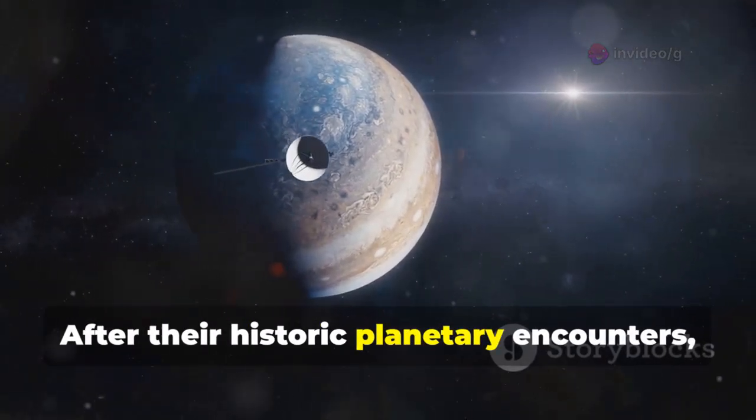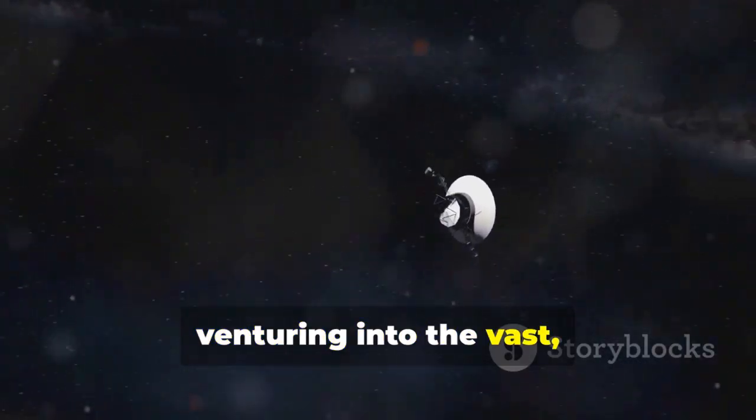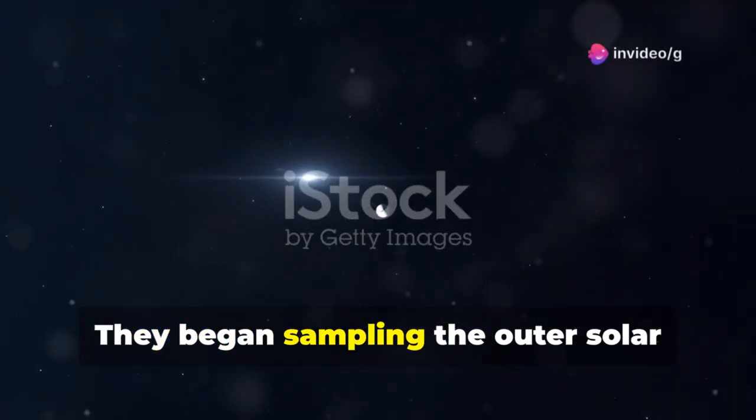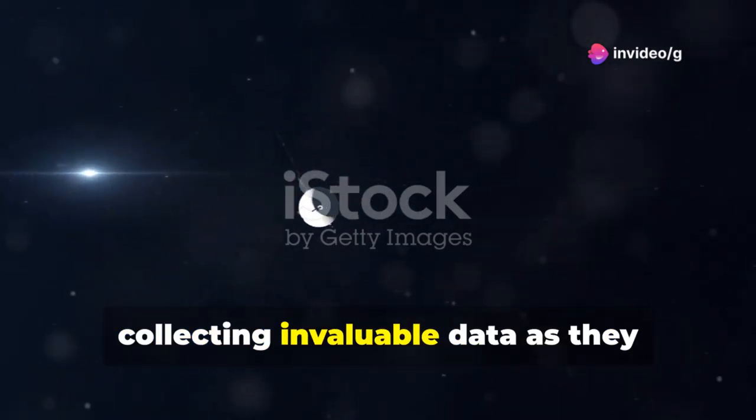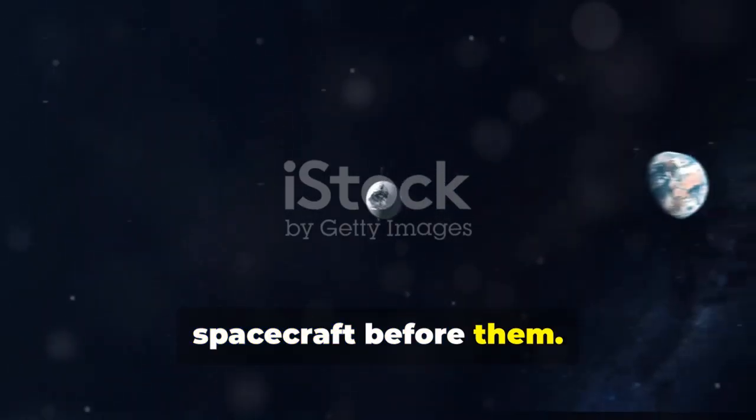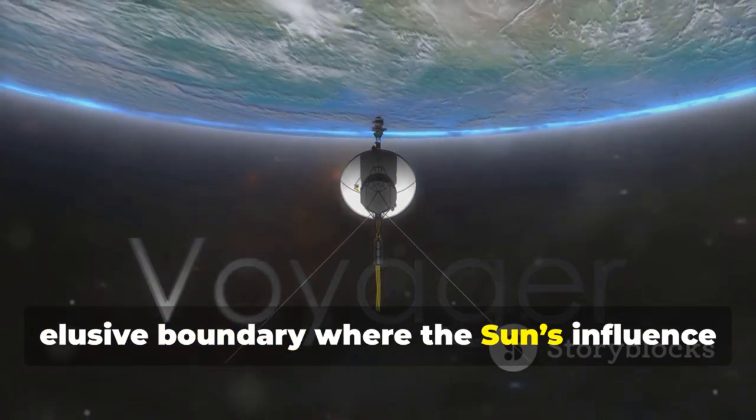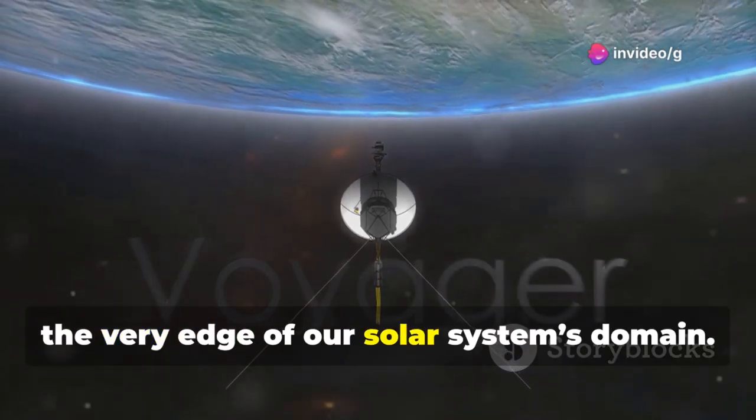After their historic planetary encounters, the Voyagers pressed onward, venturing into the vast, uncharted regions beyond the known planets. They began sampling the outer solar system's mysterious environment, collecting invaluable data as they traveled farther from the Sun than any spacecraft before them. Their new mission was clear: to find the elusive boundary where the Sun's influence fades, the heliopause, the very edge of our solar system's domain.